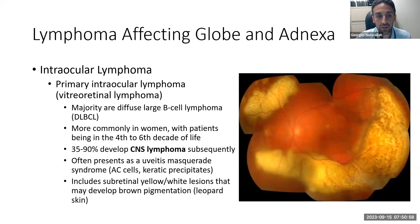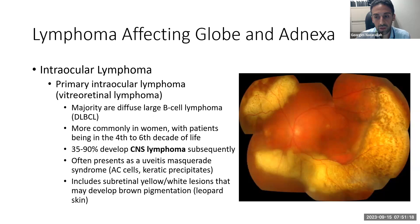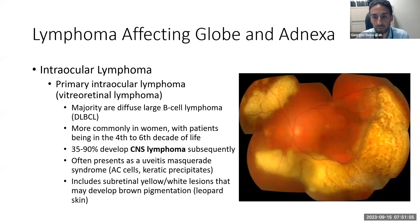Intraocular lymphoma is a distinct entity from orbital lymphoma. It is most often diffuse large B-cell lymphoma. While systemic correlations of orbital lymphoma involve the rest of the body, primary intraocular lymphoma is mostly associated with CNS lymphoma. It is more common in women in the fourth to sixth decade, and 35–90% will subsequently develop CNS lymphoma. These patients often present with uveitis masquerade syndromes. A fundus photo shows the classic leopard skin appearance.